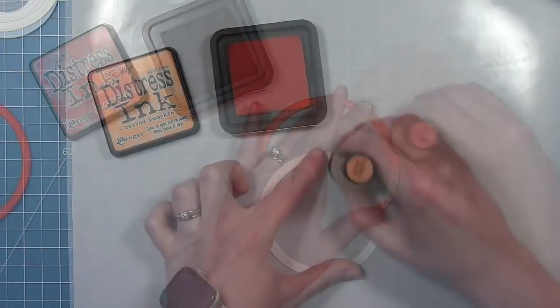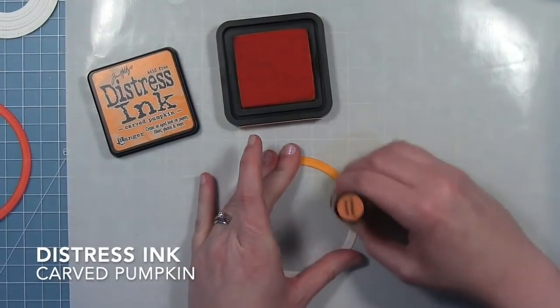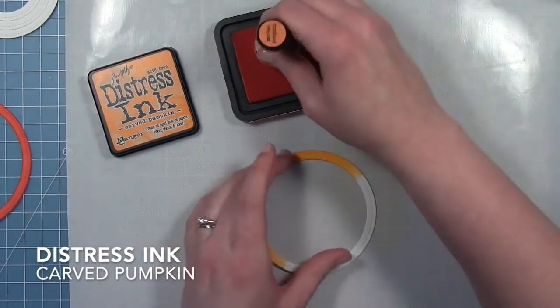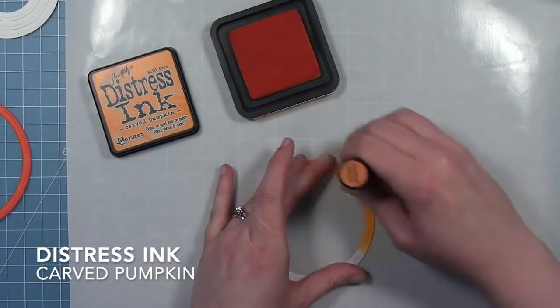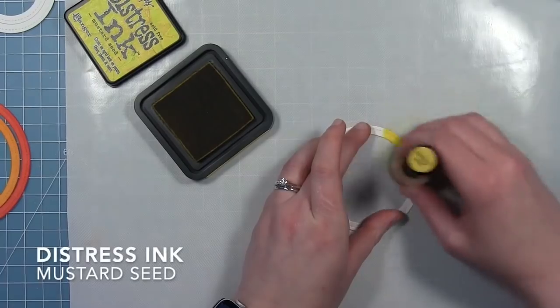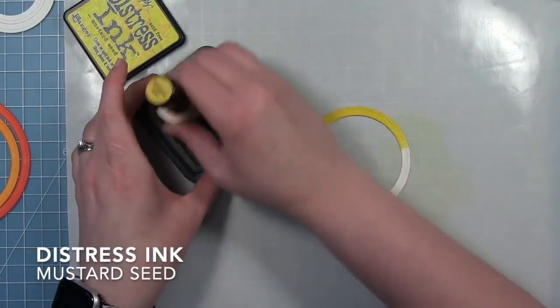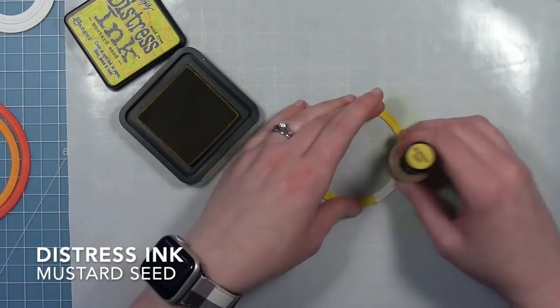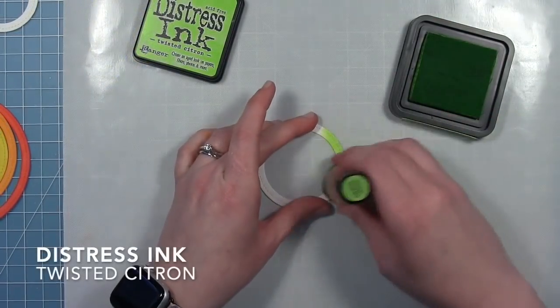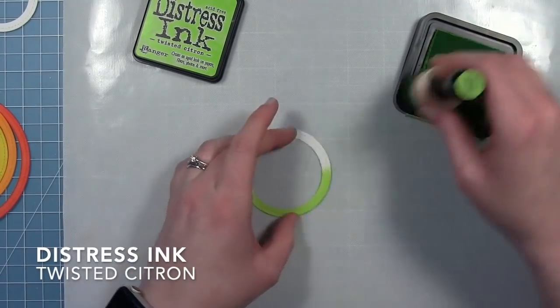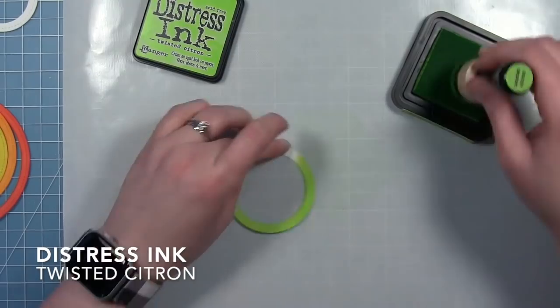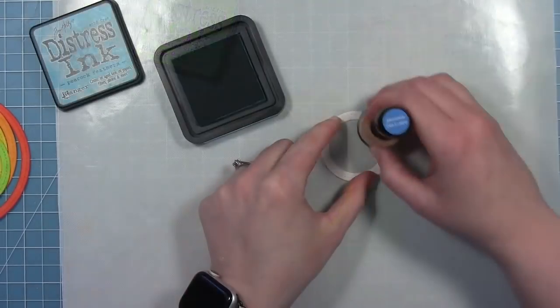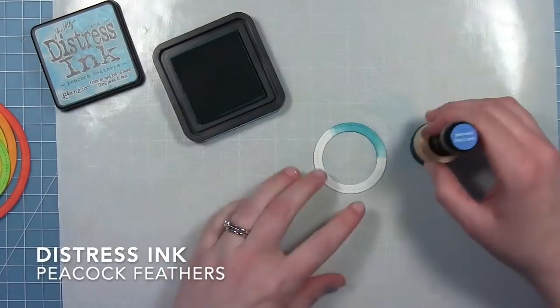So I'm starting with the largest ring and I did some festive berries distress ink. I'm going to cover this next one with carved pumpkin. Then moving on I will do mustard seed for my yellow. Twisted citron for the green. And then I'm going to use peacock feathers for the blue.